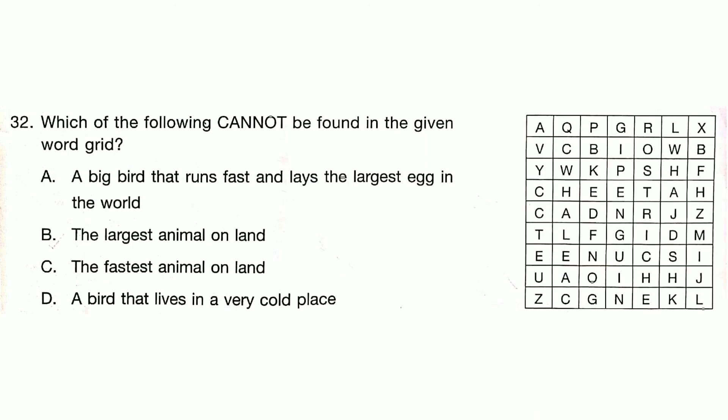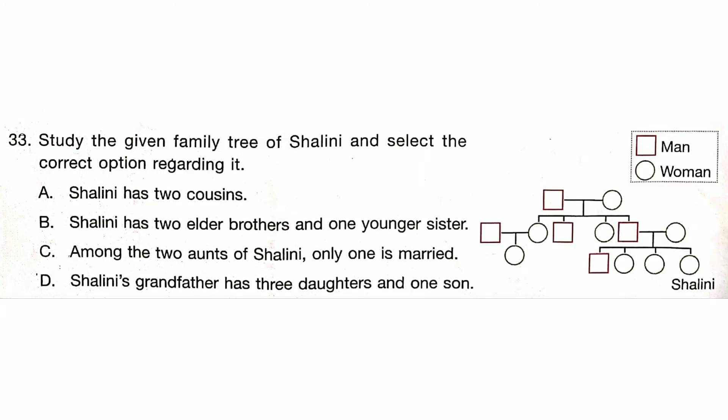Which of the following cannot be found in the given word grid? You can find the answers from the word grid by pausing the video. Answer is Option B: the largest animal on land.